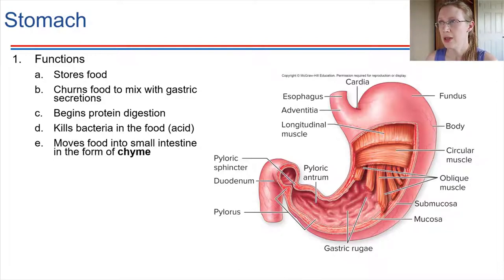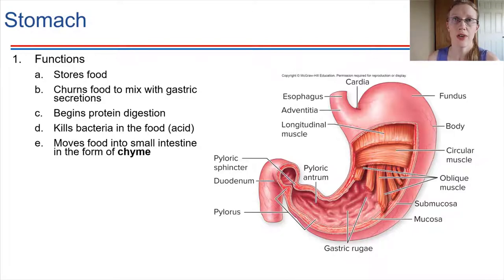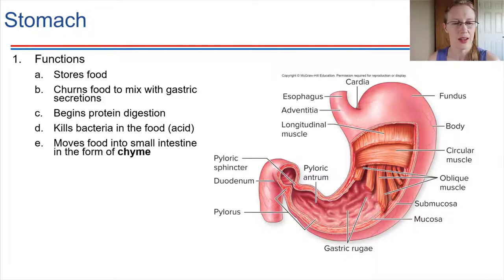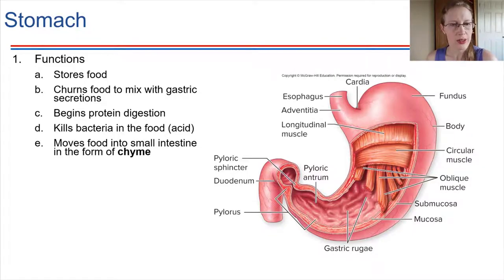In addition to that, the HCl — the hydrochloric acid produced by the stomach — also kills off a lot of the bacteria we might ingest with our food, so it has some immune activity in that sense. The food, once it has been churned and mixed by the stomach, is now called chyme.